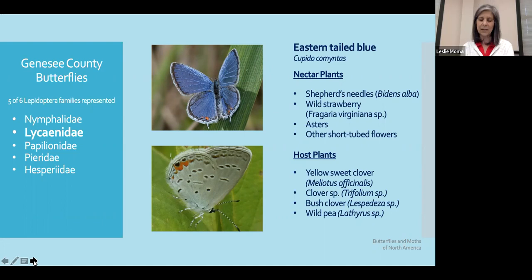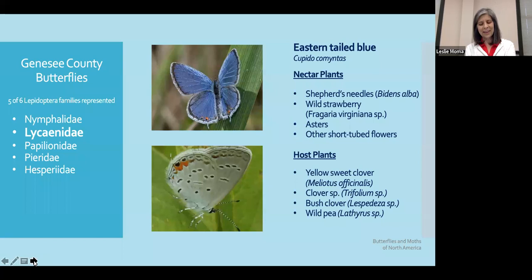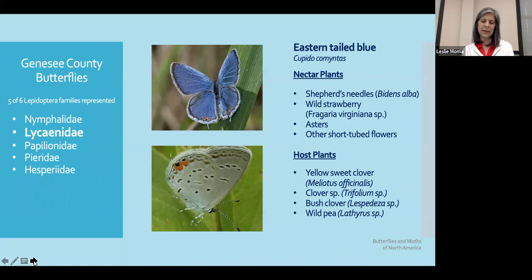Our next family is the Lycaenidae, the gossamer-winged butterflies. The adults of these species are typically small and often brilliantly colored. Not all species visit flowers for nectar, but most do. These species are reliant upon ants to protect their caterpillars because their caterpillars are slug-shaped — they're not as mobile as other caterpillars. Most species overwinter in the egg or the pupal stage of their development.